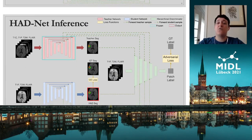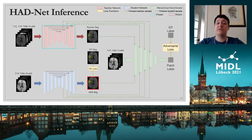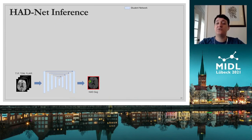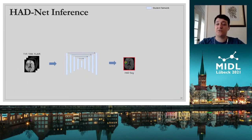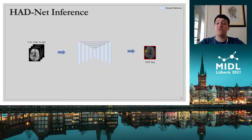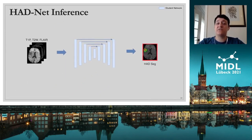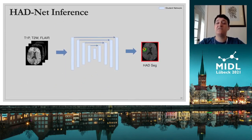Finally, once training is complete, the teacher network and the HD are discarded, and only the student network is used. Therefore, to produce segmentations during inference, one simply feeds the student network the corresponding pre-contrast sequences.